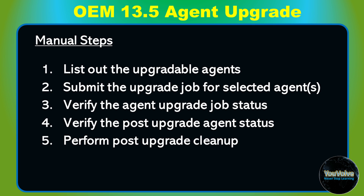Once the prerequisites are fulfilled, you can proceed with the upgrade steps. Manual upgrade of the agent software involves multiple steps: number one, list out the upgradable agents in your OEM environment; number two, submit the upgrade job for the selected agents; number three, verify the agent upgrade job status; number four, verify the post-upgrade agent status; and number five, perform post-upgrade cleanup.